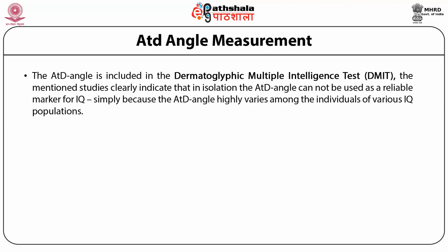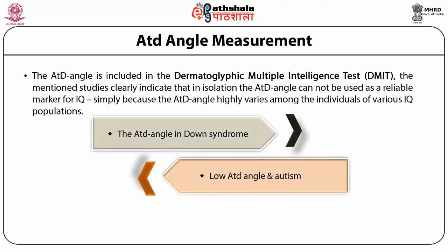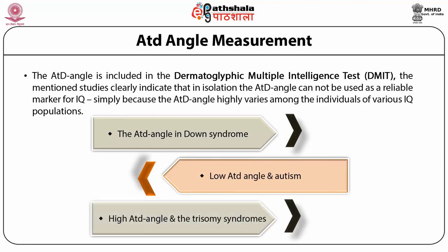The ATD angle is notably significant in Down syndrome. Most people with Down syndrome have an ATD angle greater than 56°, occurring in about 80% of cases, whereas in healthy people this characteristic is far less common, occurring in only about 7%. The ATD angle is included in the Dermatoglyphics Multiple Intelligence Test, known as DMIT. However, studies clearly indicate that in isolation the ATD angle cannot be used as a reliable marker for IQ, since it varies widely among individuals of various IQ populations. Key associations include: high ATD angle in Down syndrome, low ATD angle in Autism, and high ATD angle in Trisomy syndromes.